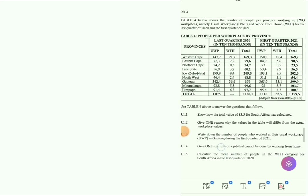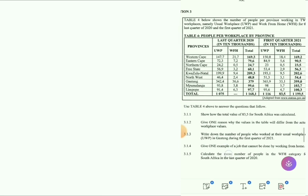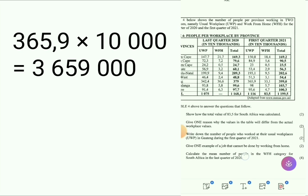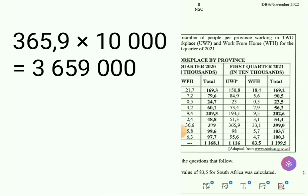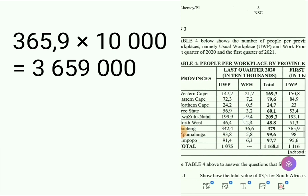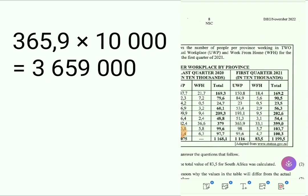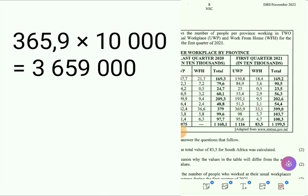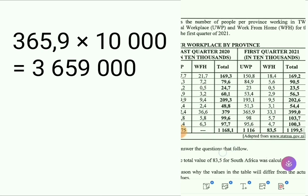The answer is 365.9 multiplied by 10,000, which equals 3,659,000. Some of you are asking where we get 10,000 — look at the table heading: the first quarter of 2021 is given in ten thousands, so we must multiply the number by 10,000. If it were in millions you'd multiply by a million, but here it's in ten thousands. They didn't write 'in 10,000' for nothing.